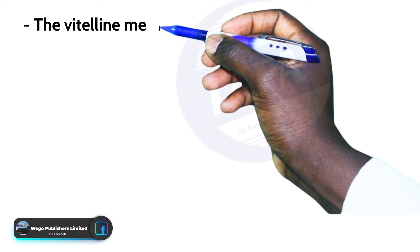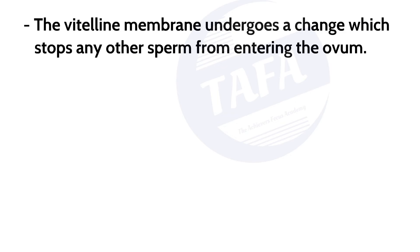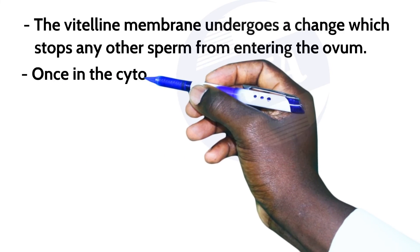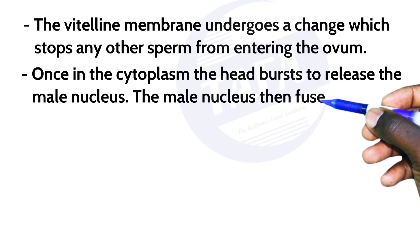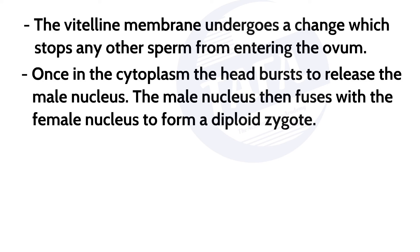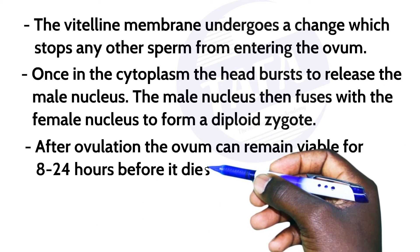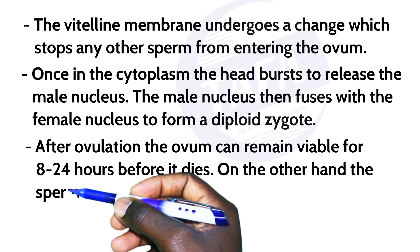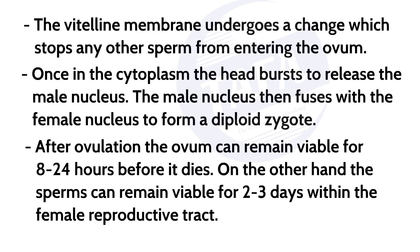The vitelline membrane then undergoes several changes that stop any other sperm from entering the ovum. Once the sperm enters the ovum, only the head enters and bursts open to release the male nucleus, which fuses with the female nucleus to form a diploid zygote. After ovulation, the ovum can remain viable for 8 to 24 hours, while sperm can remain viable for up to two to three days within the female reproductive tract.